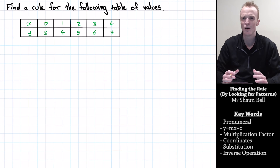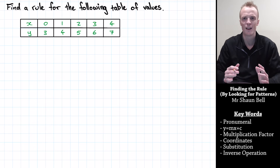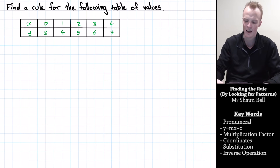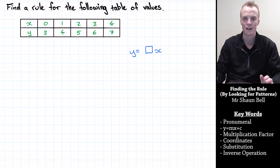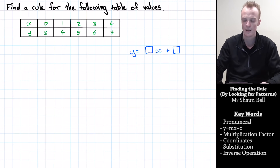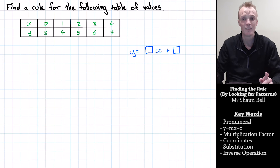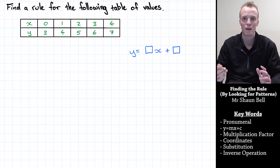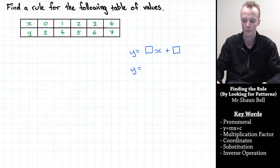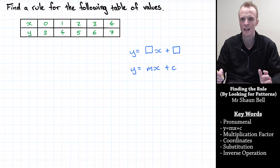Up until this point, you might have noticed that any time you're given a rule and that rule ends up being a linear relationship, it seems to follow the same general pattern: y equals some number that multiplies by x, and then sometimes plus or minus another number. For linear relationships, that tends to hold true, and we give those boxes special pronumerals. We say that all linear relationships can be represented as y equals mx plus c, where m and c are just fixed numbers that don't change for that rule.